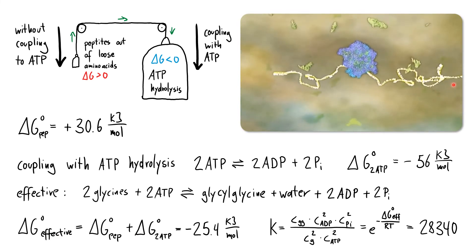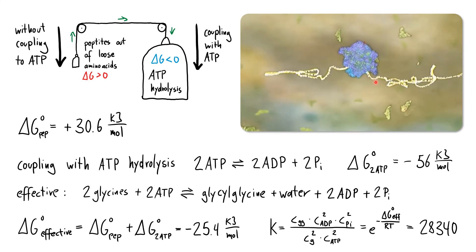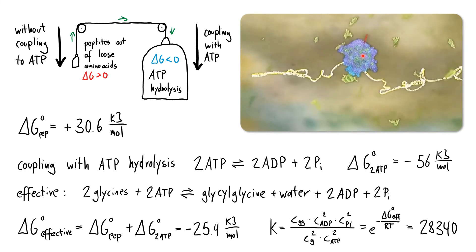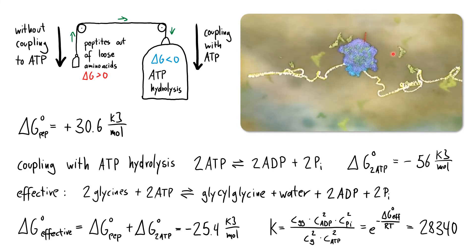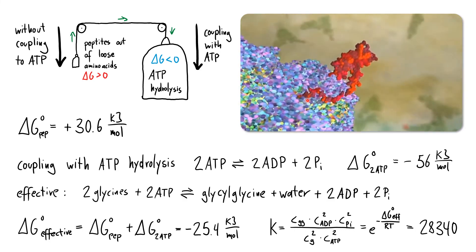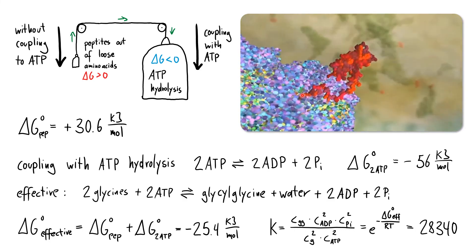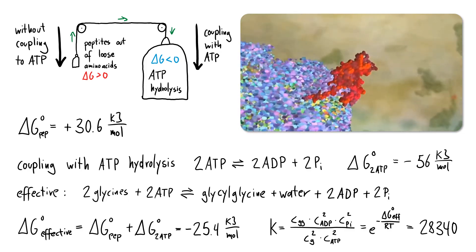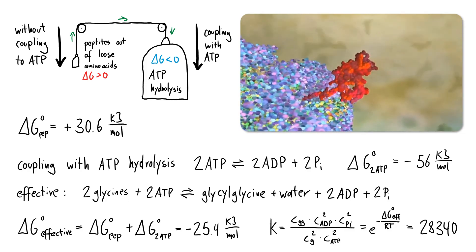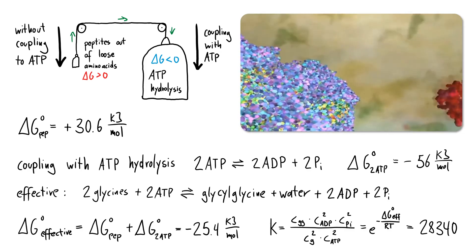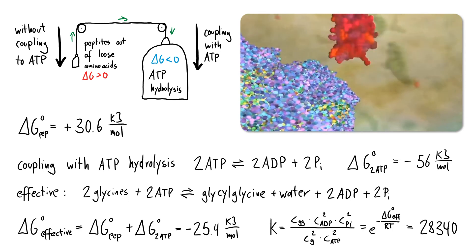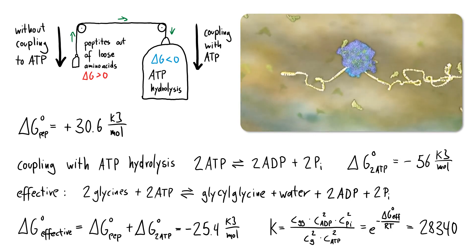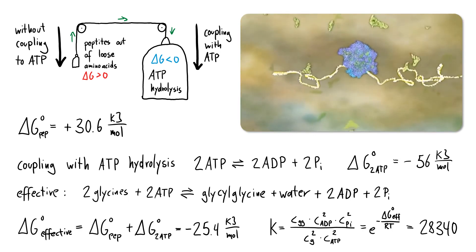That's what the cell does in ribosomes. Messenger RNA brings the genetic code specifying the amino acid sequence. Carrier molecules bring amino acids, which are then processed and bonded together via peptide bonds — driven by ATP hydrolysis — to form proteins that diffuse into the cell and carry out important biological functions.